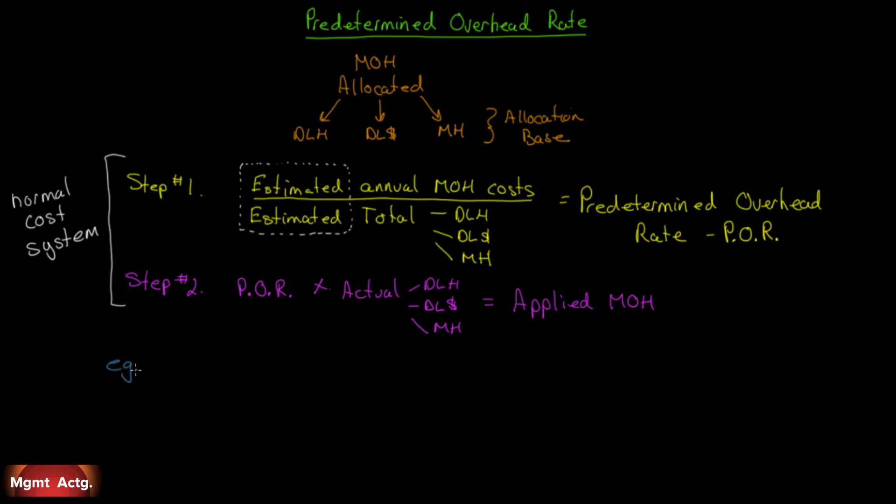Let's give a quick example. At the beginning of the year, we estimated - remember, step one is all estimates. We estimate our manufacturing overhead to be $320,000. By the way, once you're done with step one, once you have the predetermined overhead rate, you can ignore these estimates. You no longer need them. We estimate our direct labor hours to be $40,000. That's what we think we're going to incur during the year.